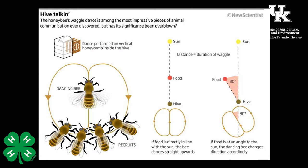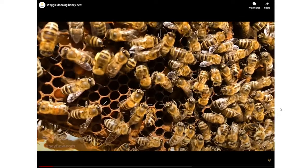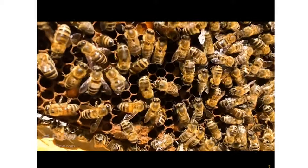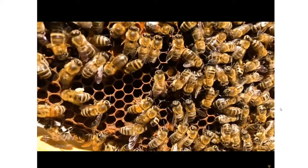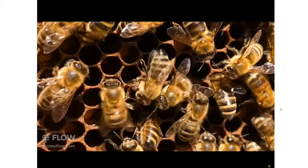Bees can't talk, so they perform what's called a bee waggle dance. They dance in a figure-eight shape and vibrate their body. The direction they're pointing during the dance relates to the proximity of the hive to the direction of the sun. If the food source is straight ahead, they dance that way; if it's at a 30-degree angle to the left, they dance in that direction. In this video you can actually see a bee doing a waggle dance — the vibration and the figure-eight shape.